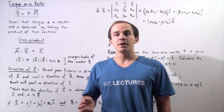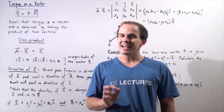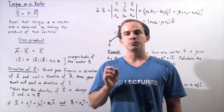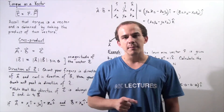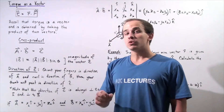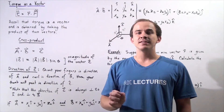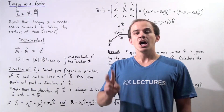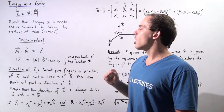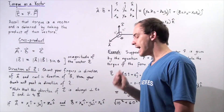A second type of product between two vectors exists and this is known as the cross product or vector product. One very common example in physics of a cross product is torque. Torque is a vector that is obtained by taking the product of two different vectors: the lever arm vector given by R and the force vector given by F.